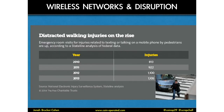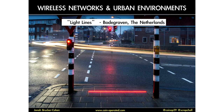Looking at wireless networks and disruption, there's distracted walking injuries. Since 2010, we've had almost double the amount of people getting hit by cars while looking at their phones when crossing the street, which is really dangerous. The Netherlands got really inventive and designed projects called light lines, where on the street and sidewalk they have a light that shows you whether it's red or green. So if you're walking like this, you're not going to get hit. It just shows how networks are changing urban environments in a lot of ways.